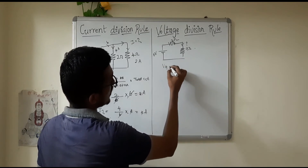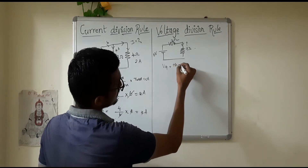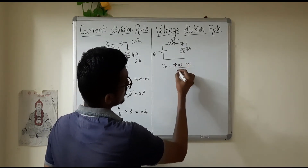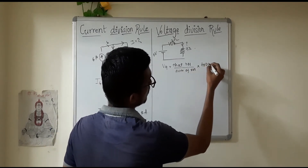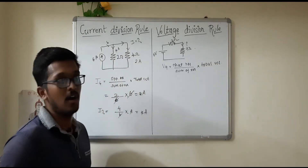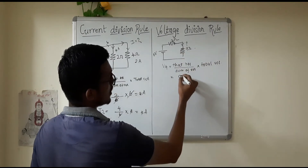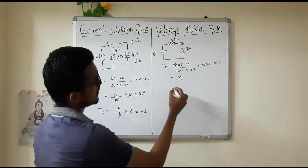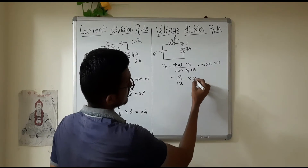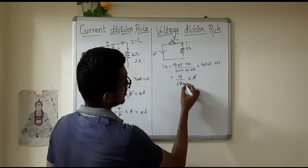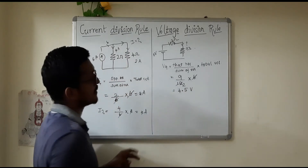To apply the voltage division rule, the formula is: that resistance divided by the sum of resistances, into total voltage. For the 9 ohm resistance: 9 divided by 12, into 6. If you cancel, the result is 4.5 volts.